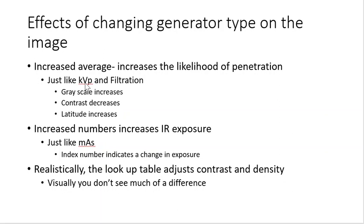If you don't adjust for changes in generator type — for example, moving from single-phase to three-phase — you'll get an increase in S-number and an index number indicating the patient was overexposed. By contrast, if you don't adjust for an increase in filtration, the index number will indicate decreased exposure to the patient and image receptor. Keep in mind that your lookup table is what adjusts contrast and density, so visually you may not see much difference, but the S-number will change and the difference may be visible on a high-resolution diagnostic monitor.